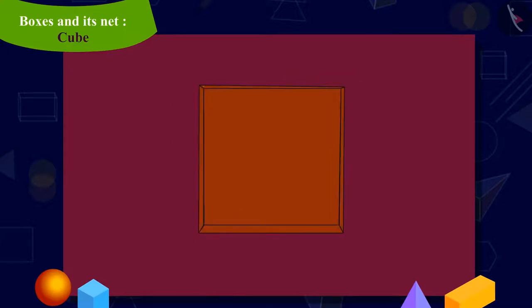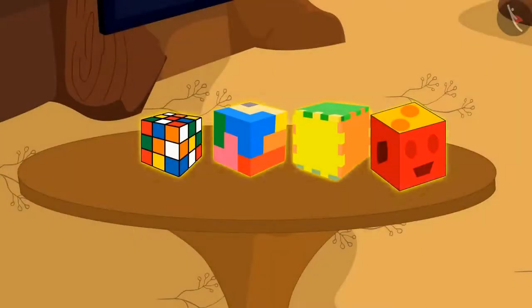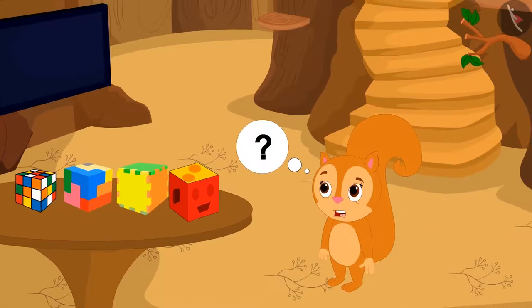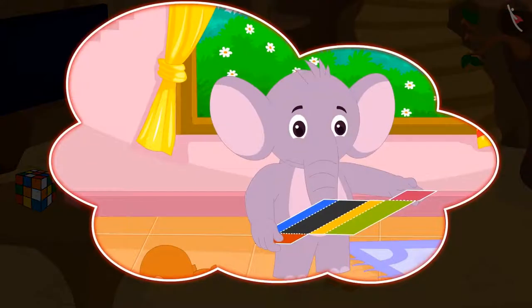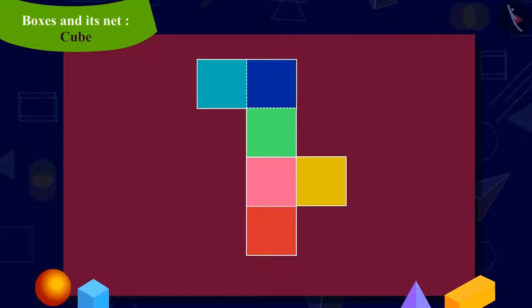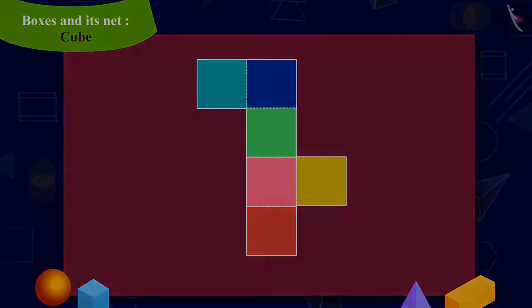Chanda wants to put these gifts in a box and then give it to Appu. But she does not have any box of this shape. Then Chanda remembered the concept of net she learned from Appu. Now Chanda quickly took a thick paper and made a shape like this on it.